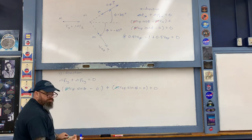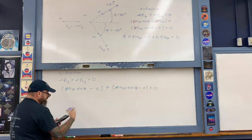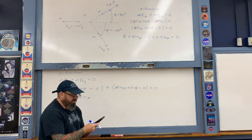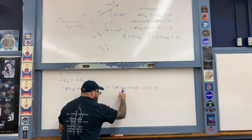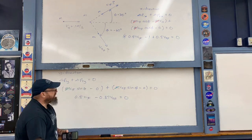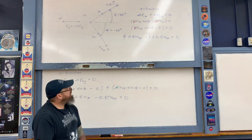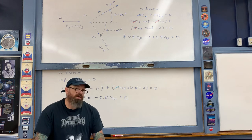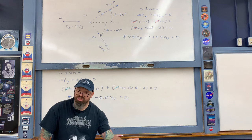Canceling mass m and plugging in: sin(30°) = 0.5, so 0.5·v1_final; and sin(−60°) = −0.87, giving −0.87·v2_final = 0. We must use negative 60 degrees because phi is in the fourth quadrant on the diagram. This ensures that v1_final and v2_final both come out as positive numbers, as they should be.